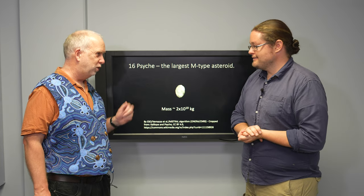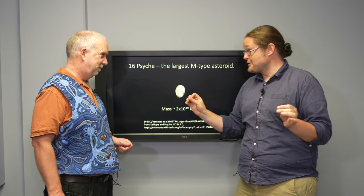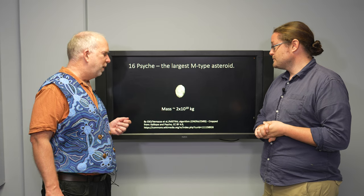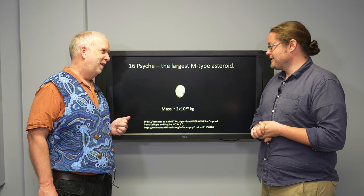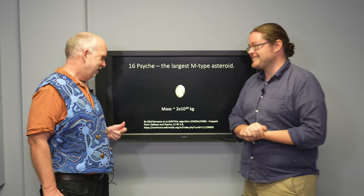So let's take 16 Psyche, the largest metal-type asteroid and one which a NASA probe is going to be launched to explore in the fairly near future. That's right, hopefully later this year at the time of filming. They estimate the mass of this is about 2×10^19 kilograms. That's a lot. In fact, you have to use scientific notation, it shows how big it is.